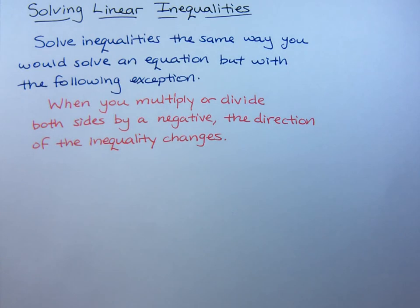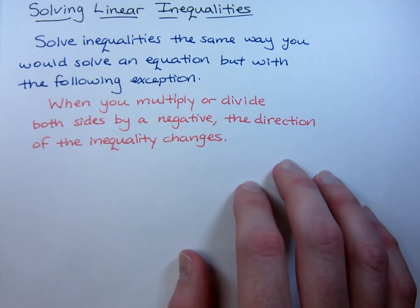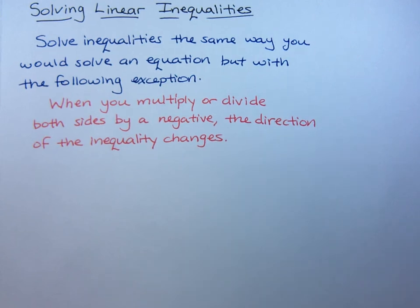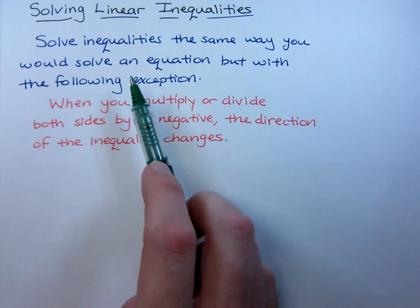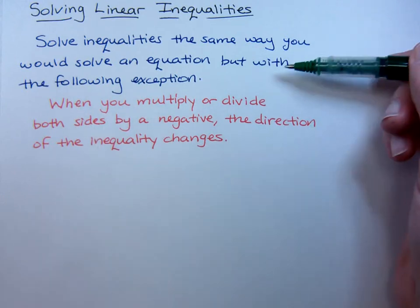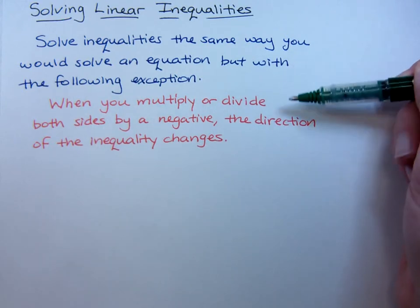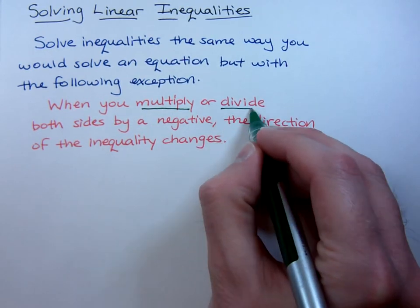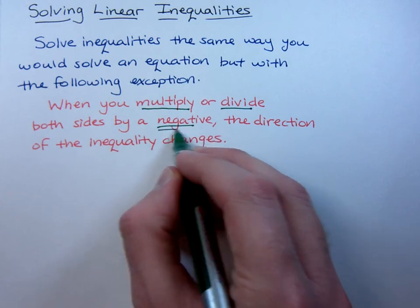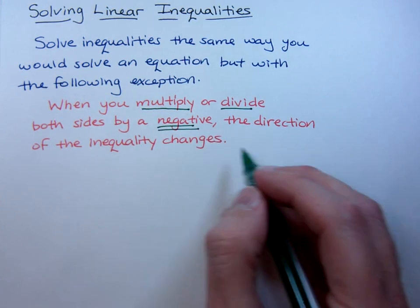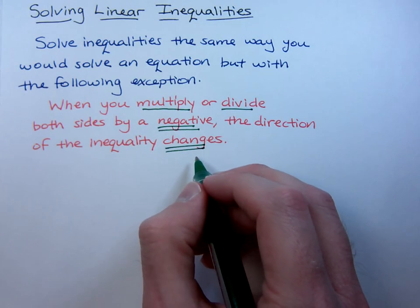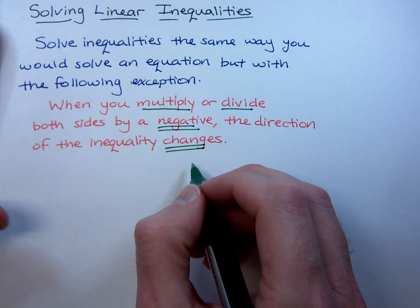Now we want to actually look at solving some linear inequalities. This is the biggest thing that we have to worry about when we're solving linear inequalities. It's really not too bad. We do solve inequalities the same way that we would solve an equation, but we've got this following exception. You've got to watch out for this. When you multiply or divide both sides by a negative, the direction of the inequality changes directions. If you multiply or divide both sides by a negative, the direction of the inequality changes directions.